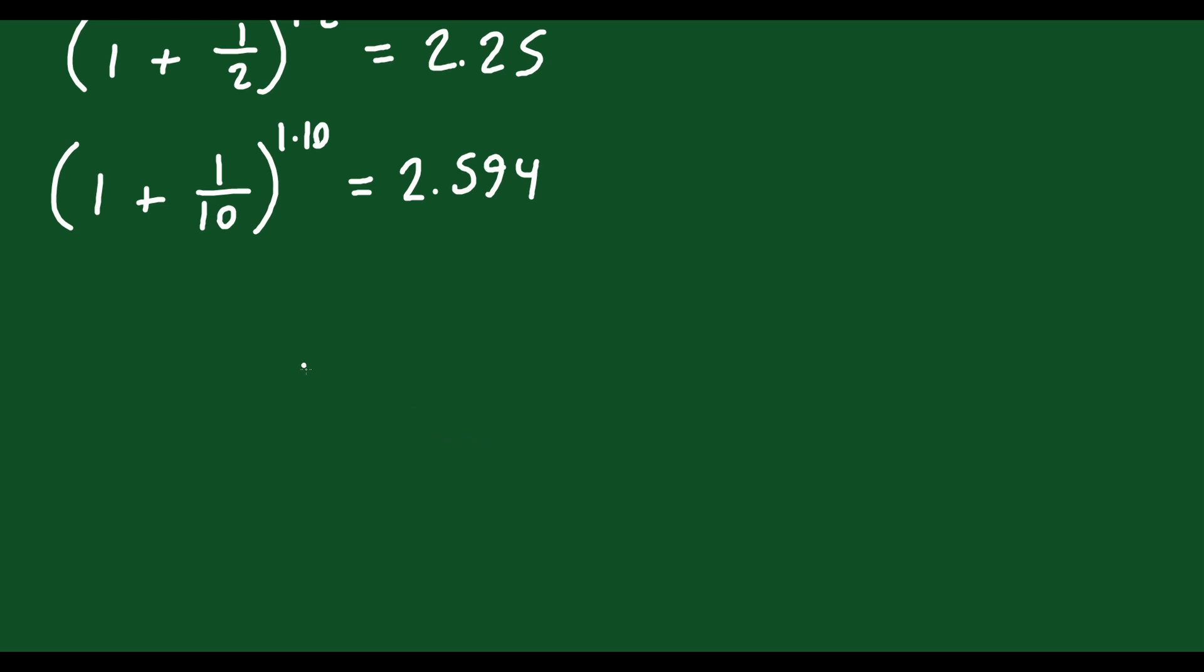Let's say I want to compound it 50 times. (1 plus 1 over 50) to the exponent of 1 times 50. If you do that, that's going to equal 2.692. Still getting bigger. So let's do it again.